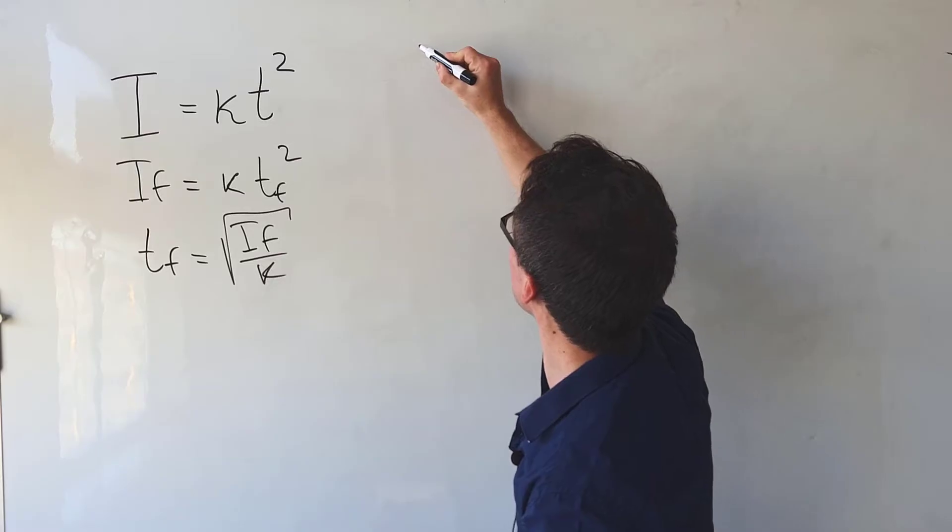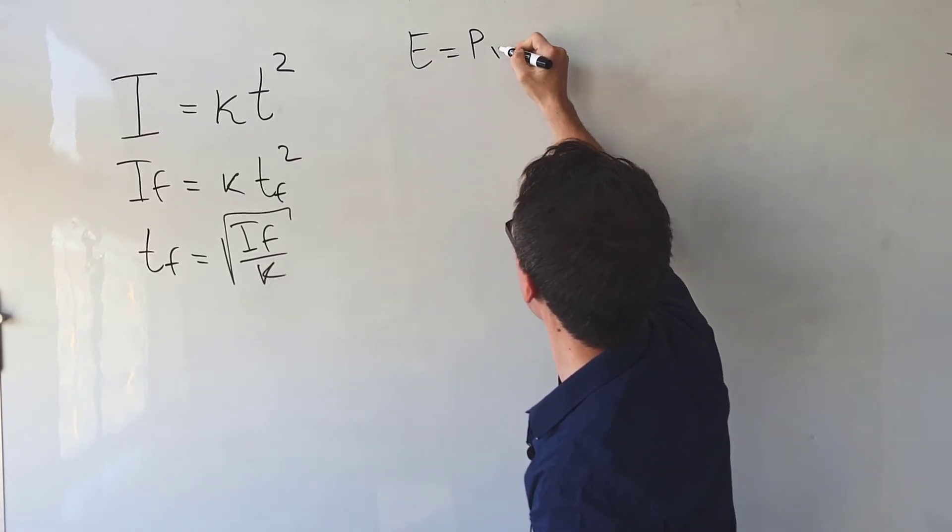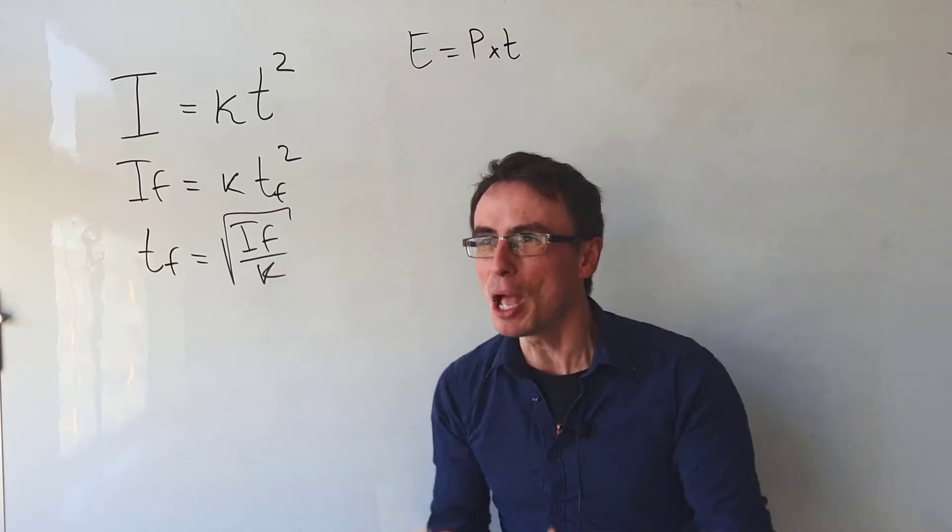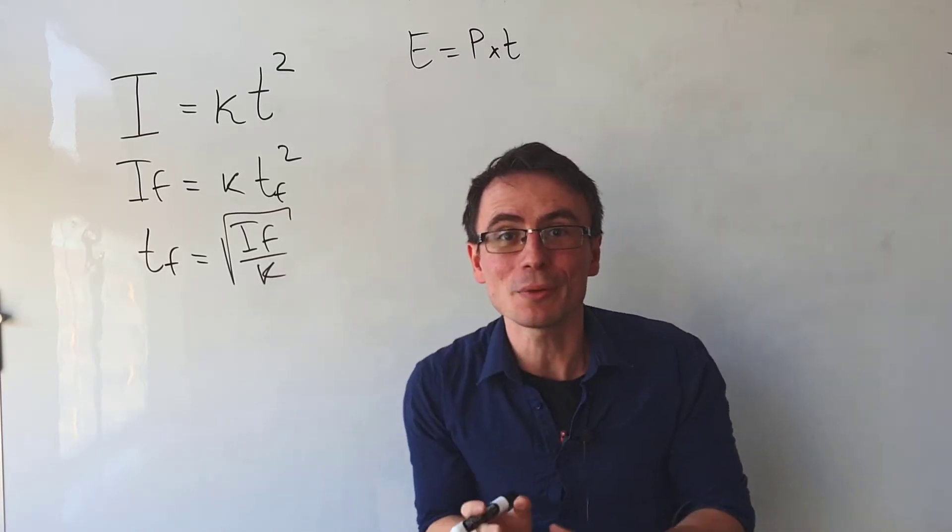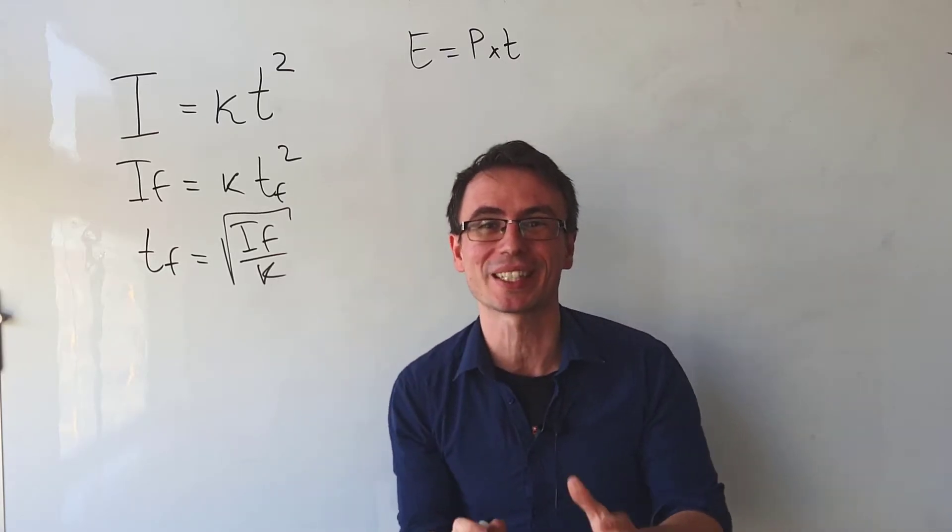In this question we're looking for the electrical energy and we know that energy is equal to power multiplied by time, but this equation only works when the current and the voltage are constant and in this case they depend on time.